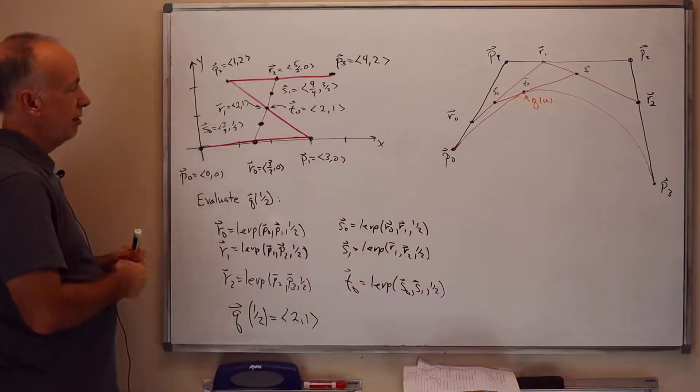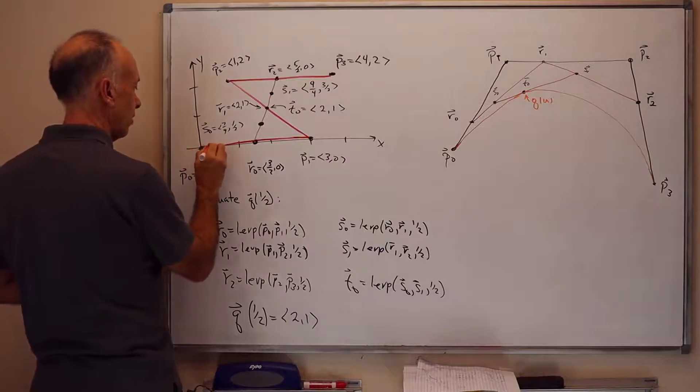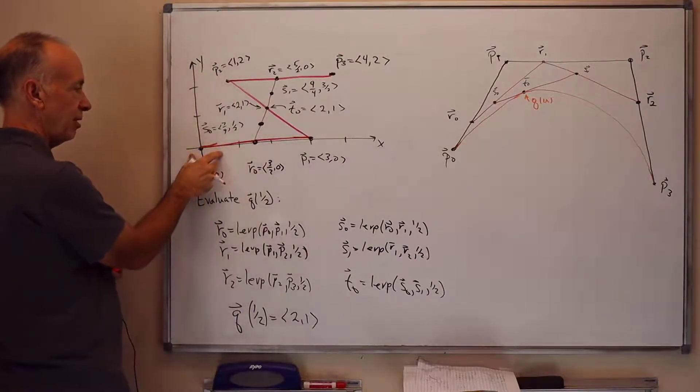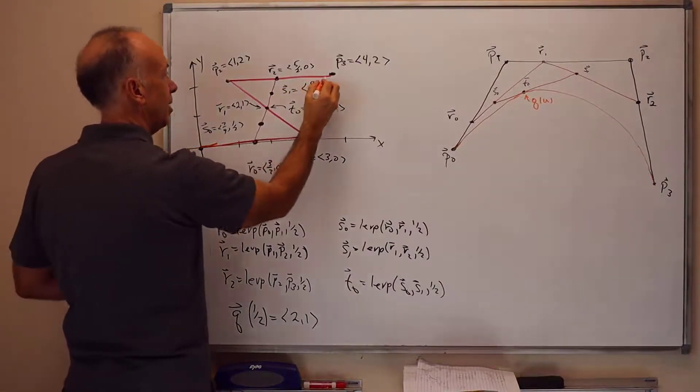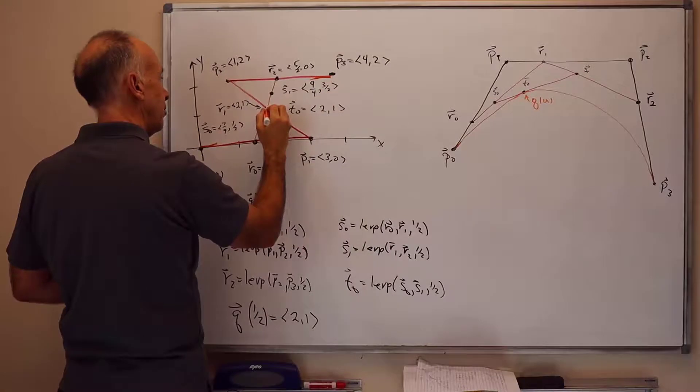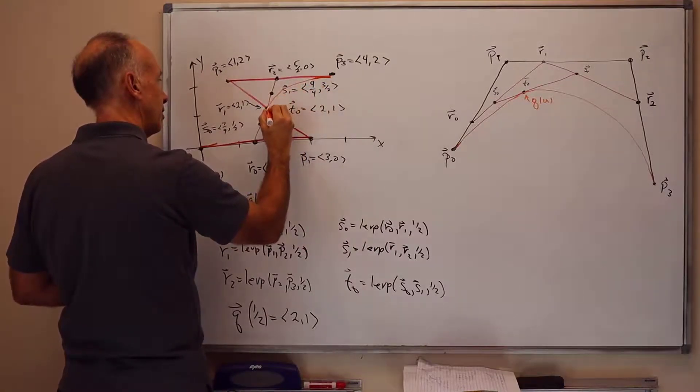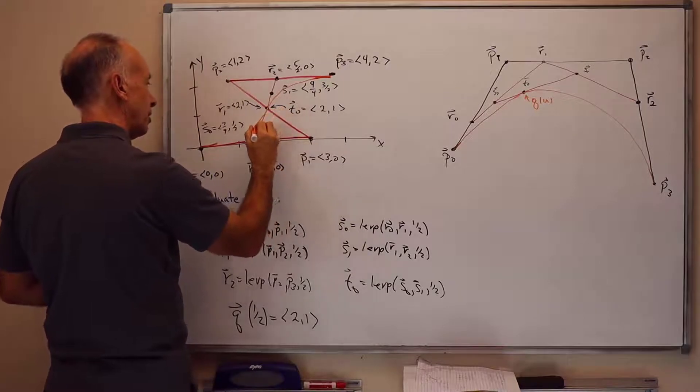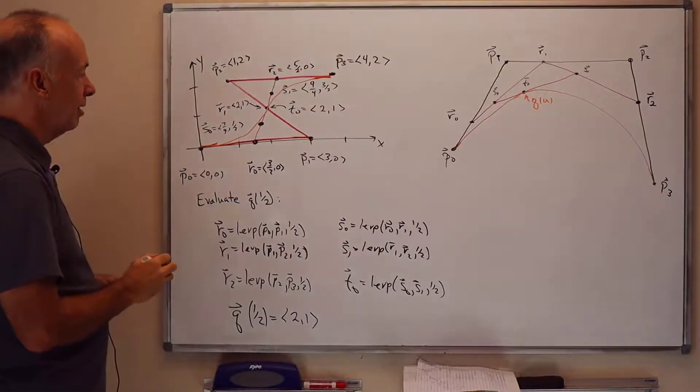If we were going to draw this whole curve Q, we know that Q starts off tangent to the x-axis because the first edge of the control polygon is along the x-axis. It ends up tangent to the line Y equals 2 for the same reason. In the middle, it's got slope that's tangent to this line here between S0 and S1. So the curve looks something like this.